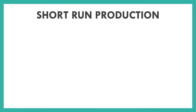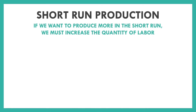In the short run, our capital is going to be fixed. So if we want to produce more of a product in the short run, we must increase the quantity of labor. We're going to be working on a table — I think it's on the back page of your 3.2 notes. The first column is just the number of workers we have per day, or what we're going to call our labor.